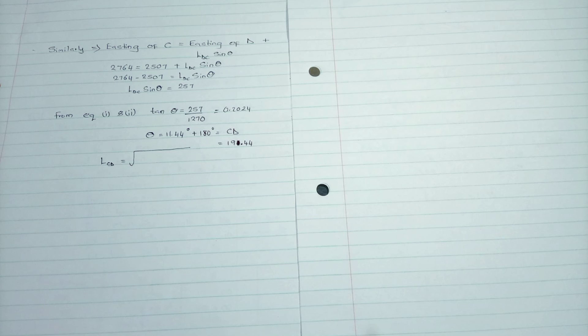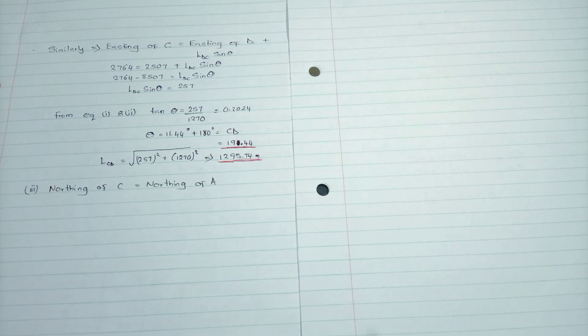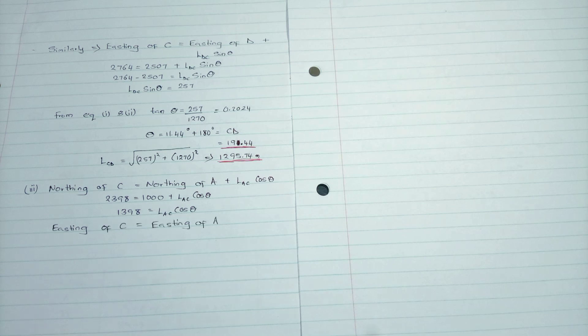Similarly, for finding the length, we find the square root of both answers squared. So we have the bearing and the length. Then we come to our next part. The northing of C will be equivalent to the northing of A plus the length AC cos theta. We do the same from our previous work, and also for the easting we do the same.